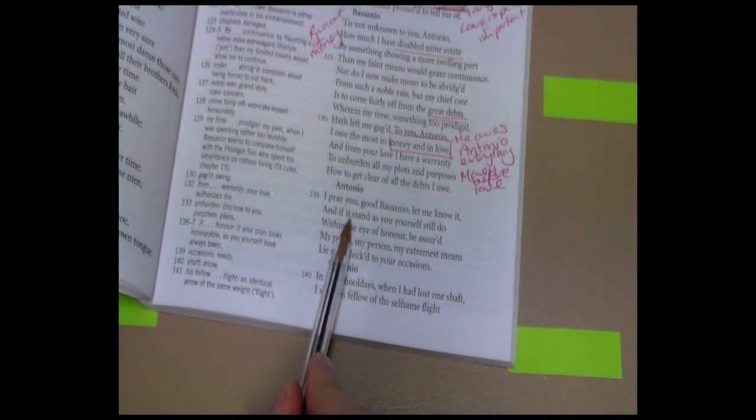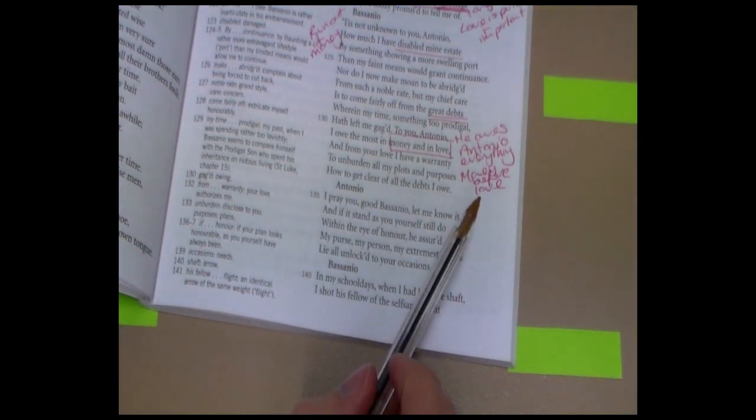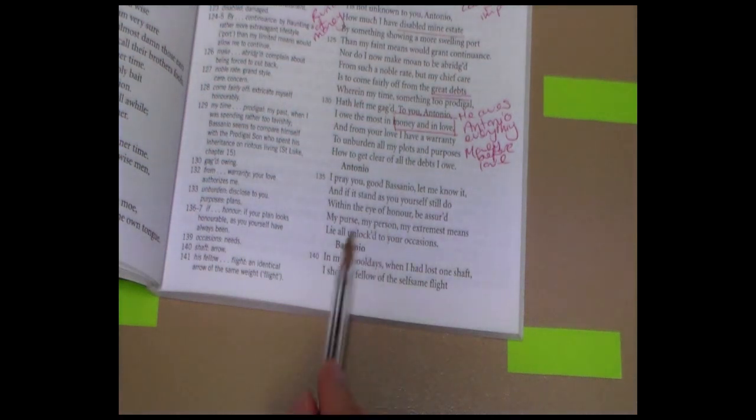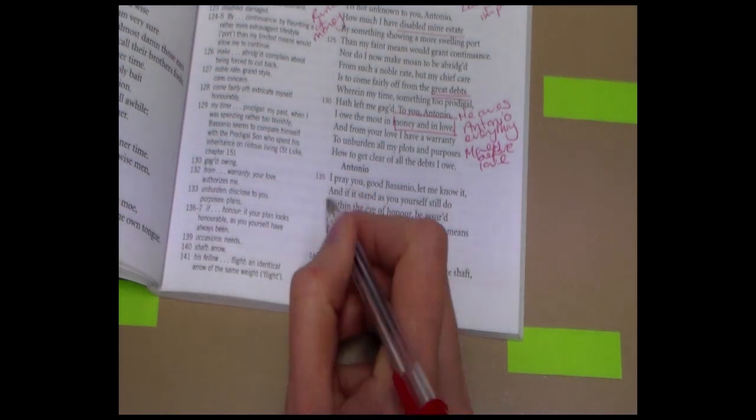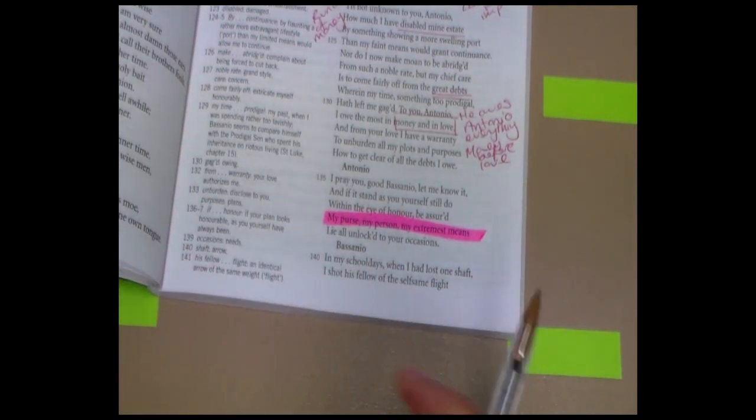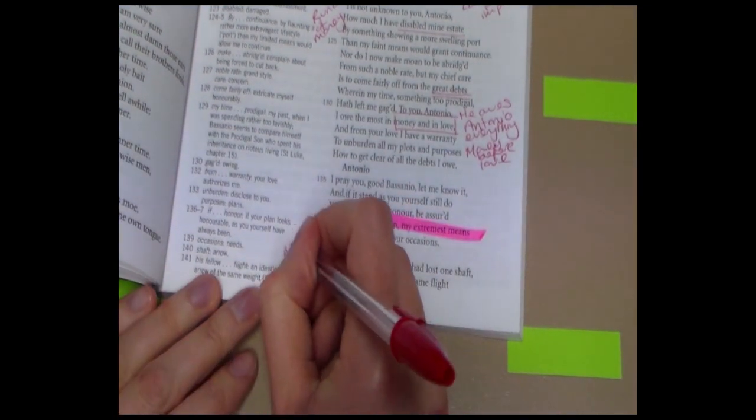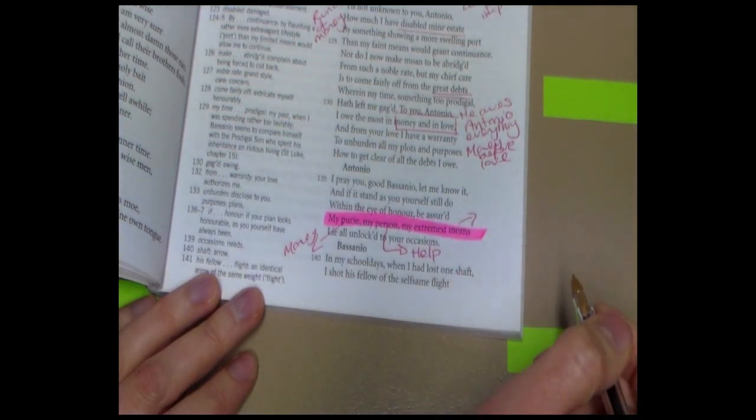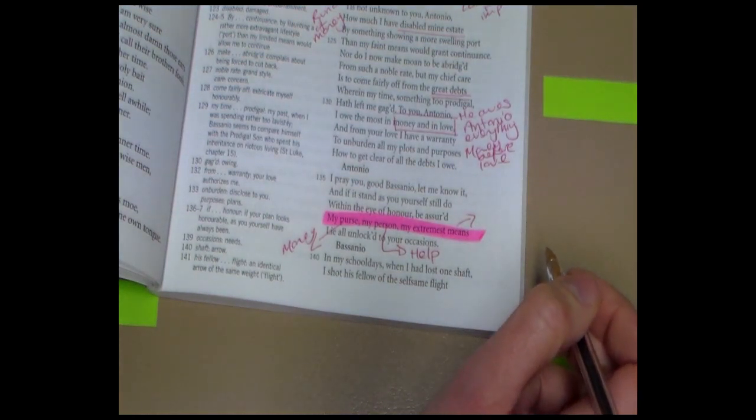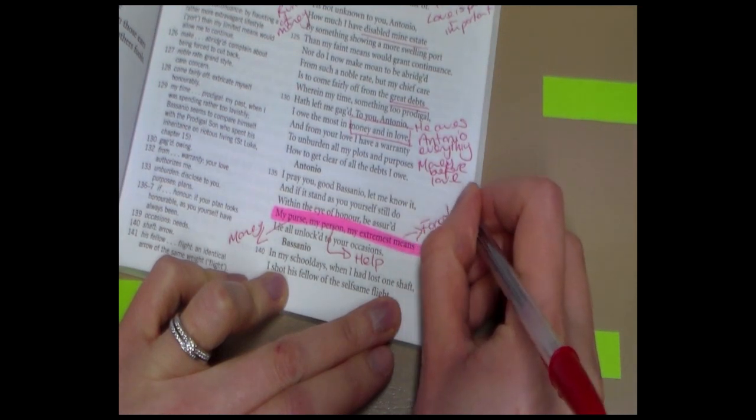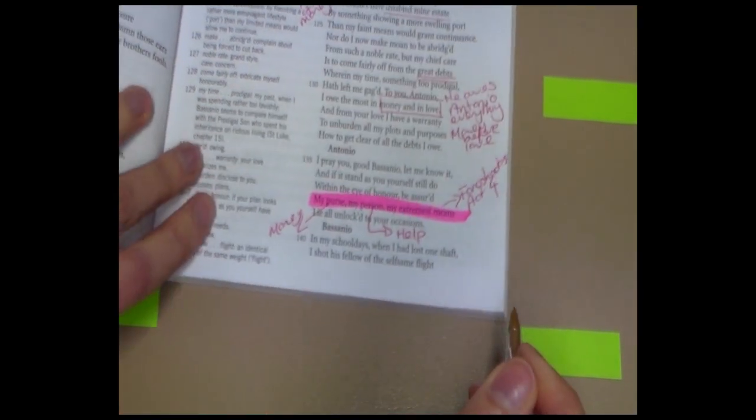But he's got a plan. So Bassanio is having this conversation with Antonio, and he says that he wants to unburden all my plots and purposes, how to get clear of all the debts I owe. So he's got a plan to get rid of all of his debt. Now, Antonio's quite excited for him. I pray you, good Bassanio, let me know it. And he says that he will help him. He says that he'll use his purse, his person, and his extremist means to help his friend. Now, that's one of our key quotations in the play. So we're going to make sure that we highlight this. My purse, my person, my extremist means. This quotation tells us a lot about his character. He offers money, he offers to help in any way he can, and the extremist means, we need to write down foreshadow the end of this play, in Act 4, where Antonio finds himself in court over the potential loss of a pound of flesh for his friend. So we'll put foreshadows Act 4.